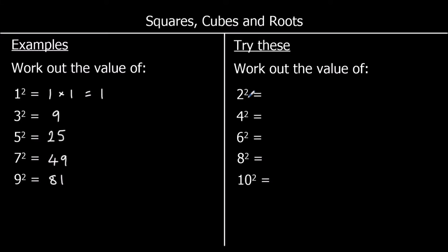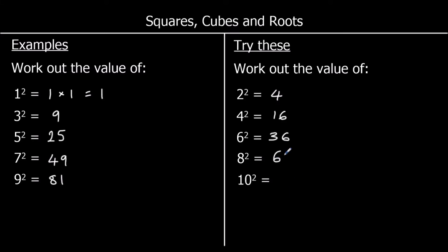2 squared means 2 times 2, which is 4. 4 squared means 4 times 4, which is 16. 6 squared means 6 times 6, so 36. 8 squared is 8 times 8, which is 64. And 10 squared is 10 times 10, which is 100.